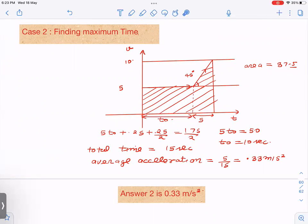Since this is again 45 degrees, this is 5 seconds. This t₀ duration we will calculate from area under the curve. Area is 5t₀ plus 25/2 equals 175/2. From here, you get t₀ as 10 seconds. So total time here is 15 seconds. This is maximum time, giving minimum average acceleration, which is 0.33 meters per second squared.